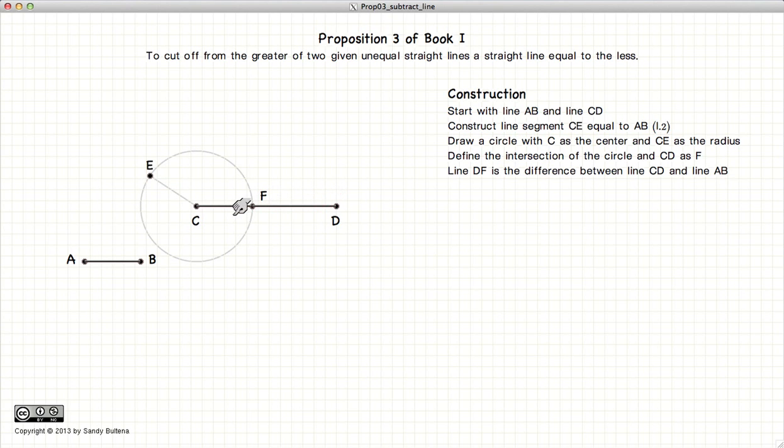And consequently, DF is equal to DC minus AB. So how do we prove this?